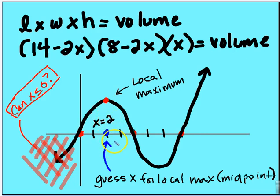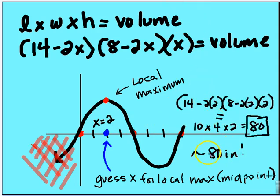We're going to estimate that value is x is equal to 2. Ends up not being exactly the value, but it's close enough. So x is equal to 2 is going to maximize our volume, and then we're going to find out what that volume is: 80 cubic inches.